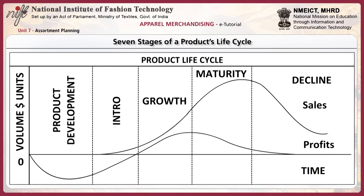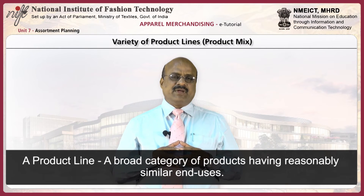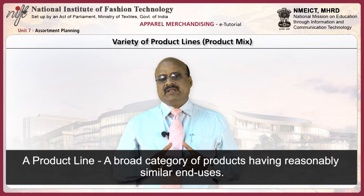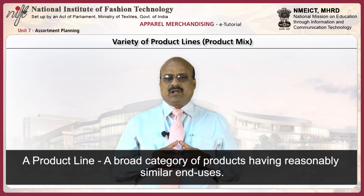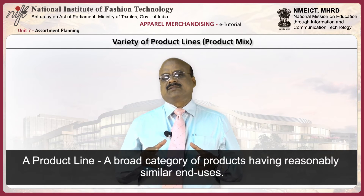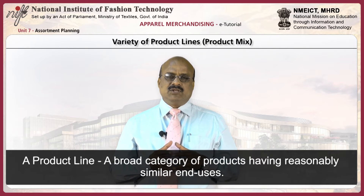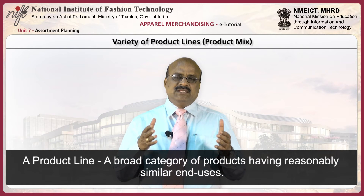A product's lifecycle may be divided into seven stages: research and development, introduction into the market, product growth, and product decline and obsolescence. A product line may be defined as a broad category of products having reasonably similar end uses, and the variety of product lines or product mix offered by any retailer will be based on the type of retail store or format.